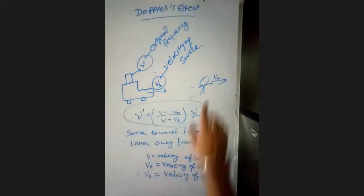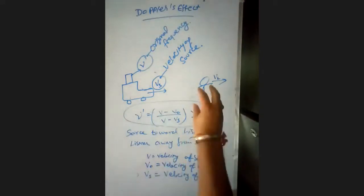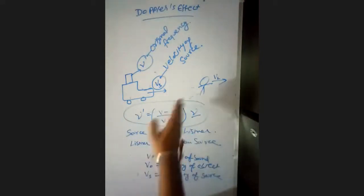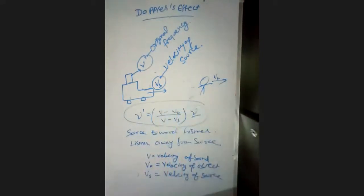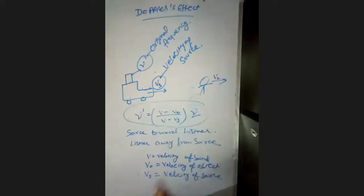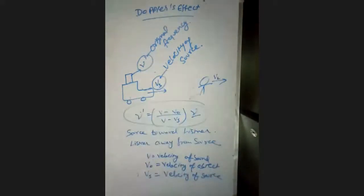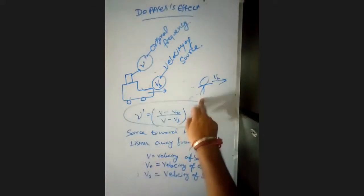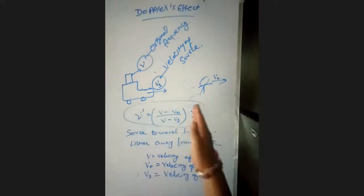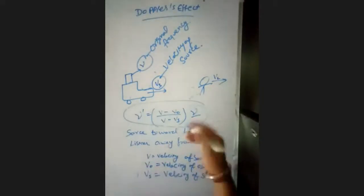There is a listener here — a person who is running ahead of this Jeep. The Jeep is moving at velocity Vs and its siren is producing frequency ν. The person running ahead has a velocity VL. We call this person the listener, because that person will listen to the siren.